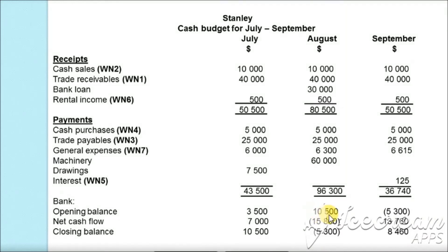The closing balance of July ($40,500) becomes the opening balance for August. In August, total inflows of $80,500 minus total outflows of $96,300 gives a net cash deficit of $15,800. The closing balance is $40,500 − $15,800 = negative $5,300. This deficit becomes the opening balance for September. In September, net cash inflow of $50,500 minus outflows of $36,740 gives a net cash flow of $13,760. Closing balance: −$5,300 + $13,760 = $8,460.